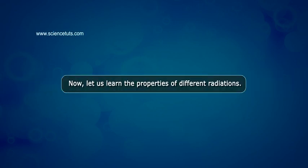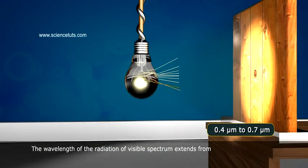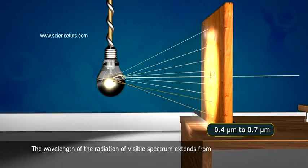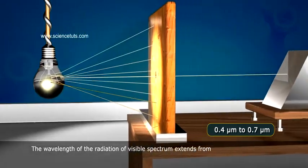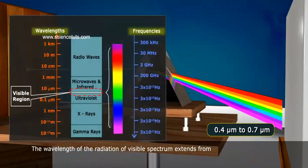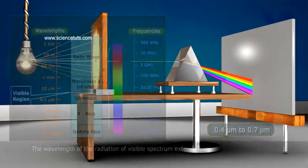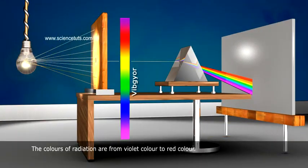Now, let us learn the properties of different radiations. The wavelength of the radiation of visible spectrum extends from 0.4 micrometres to 0.7 micrometres. The colours of radiation are from violet colour to red colour.